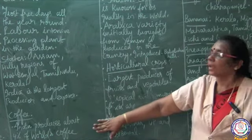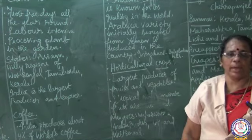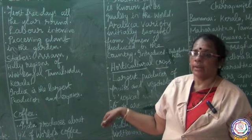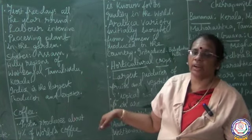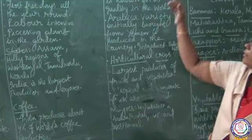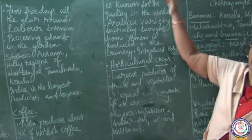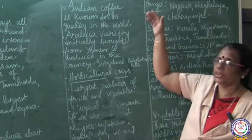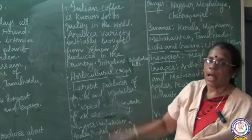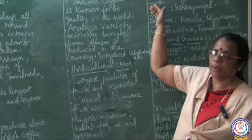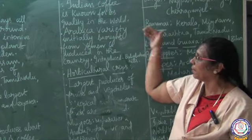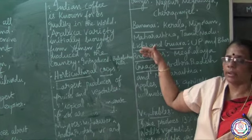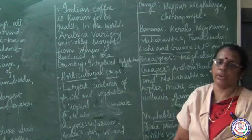The next plantation crop is coffee. Coffee is also a plantation crop and a beverage crop. India produces nearly 4% of the world's coffee production. Indian coffee is well known for its quality. The Arabica variety of coffee was initially brought from Yemen and is now produced in our country. Baba Budhan Hills in Karnataka is famous for coffee cultivation.